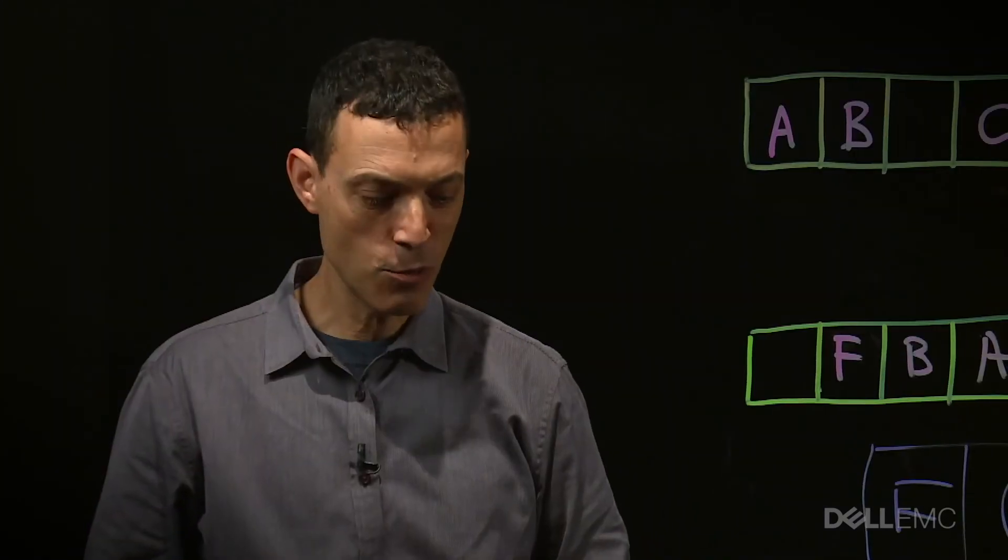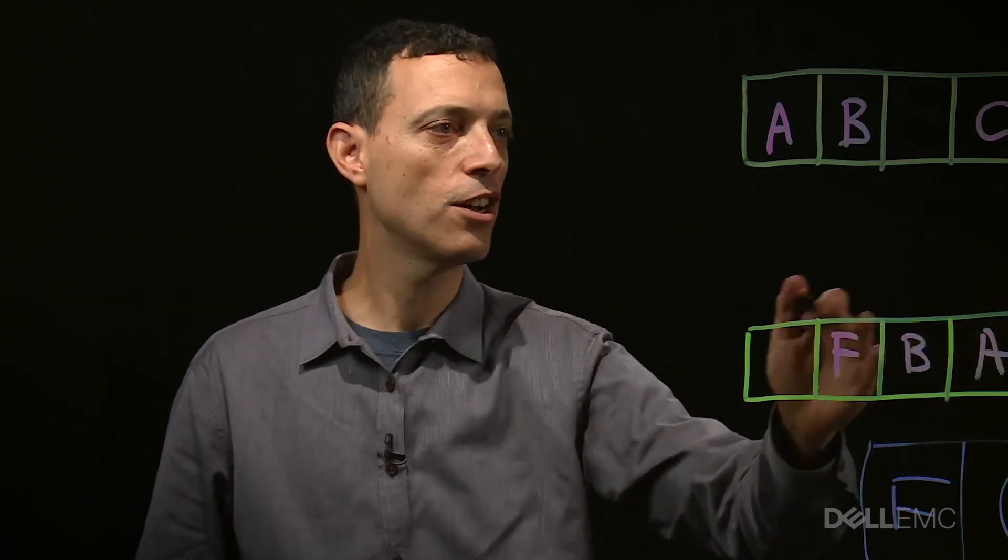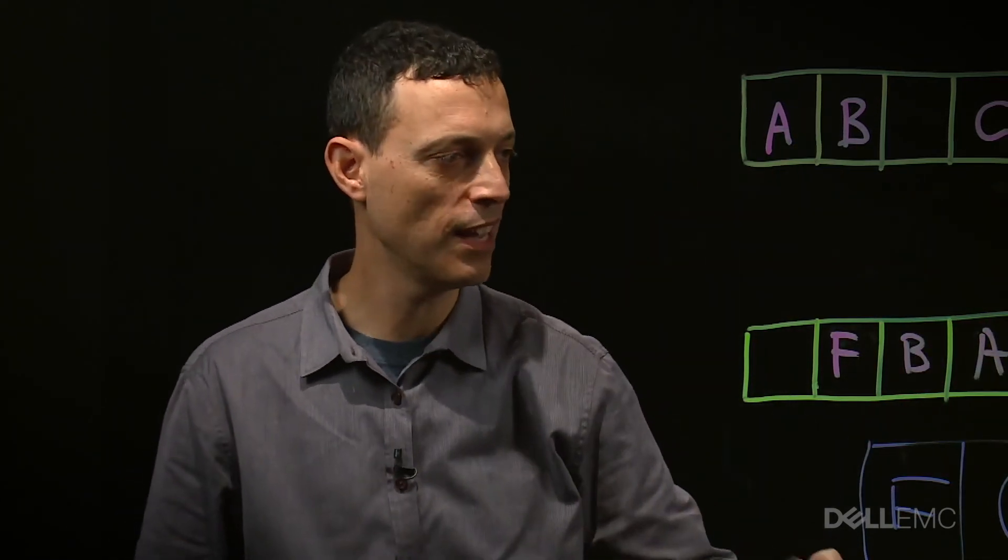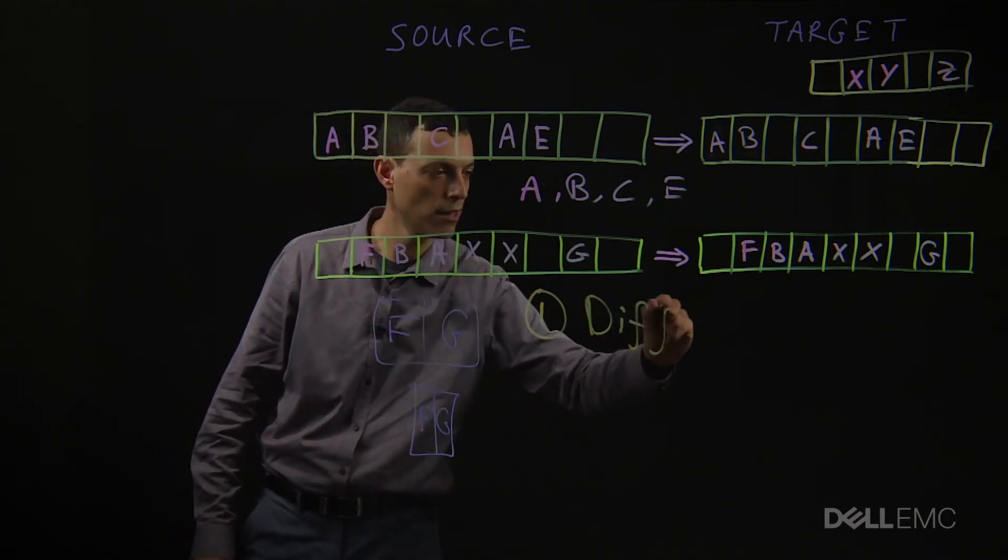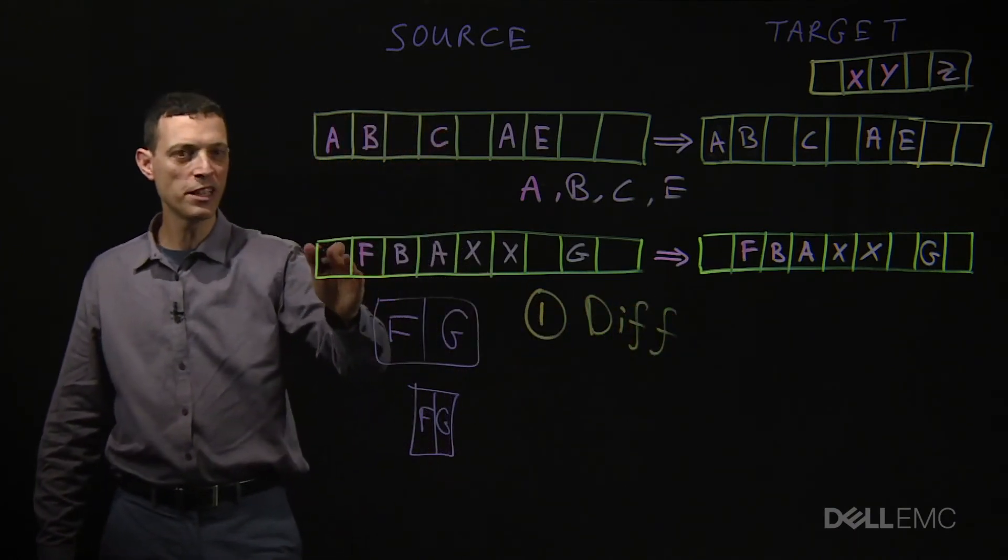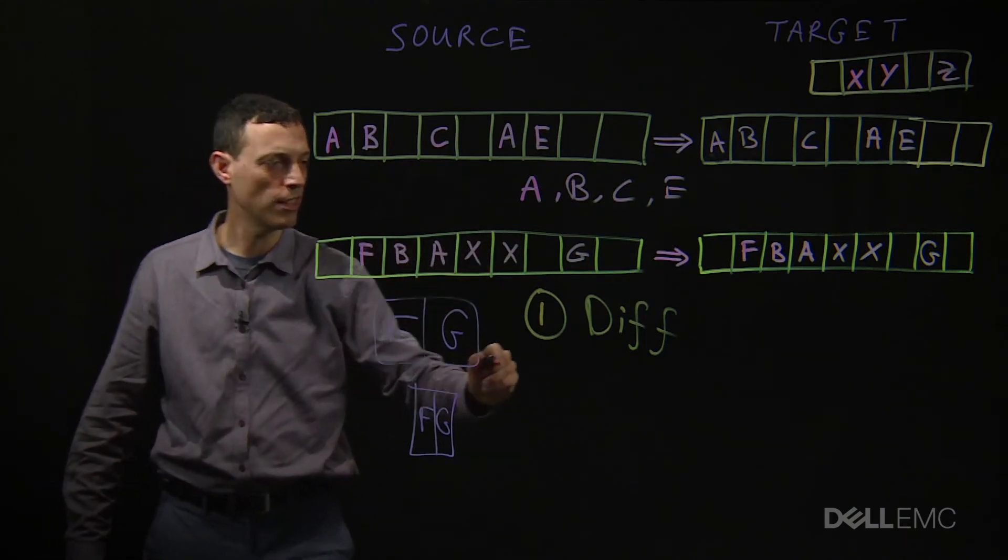So let's see what we got here. We started with a diff that got only the differences from the last cycle. Then we did a dedupe process that eliminated the blocks that are already on target.